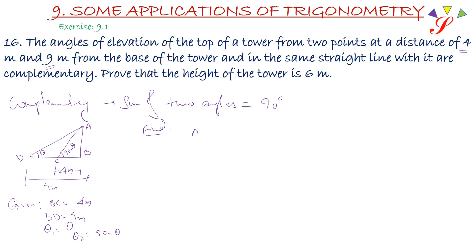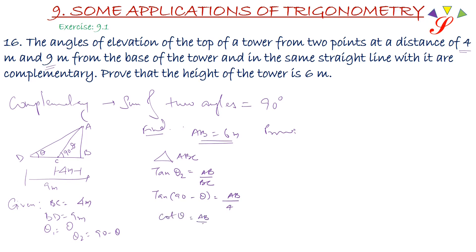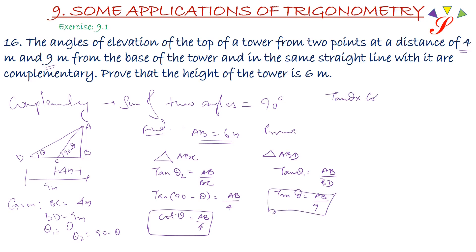Let's name the points A, B, C and D. Given: BC = 4 meter, BD = 9 meter. Theta 1 is theta and theta 2 is 90 minus theta. We have to prove the height of the tower AB = 6 meter. For the first triangle ABC: tan theta 2 equals AB upon BC, so tan(90 minus theta) equals AB upon 4. Tan(90 minus theta) is cot theta, which equals AB upon 4. For triangle ABD: tan theta 1 equals AB upon BD, so tan theta equals AB upon 9.